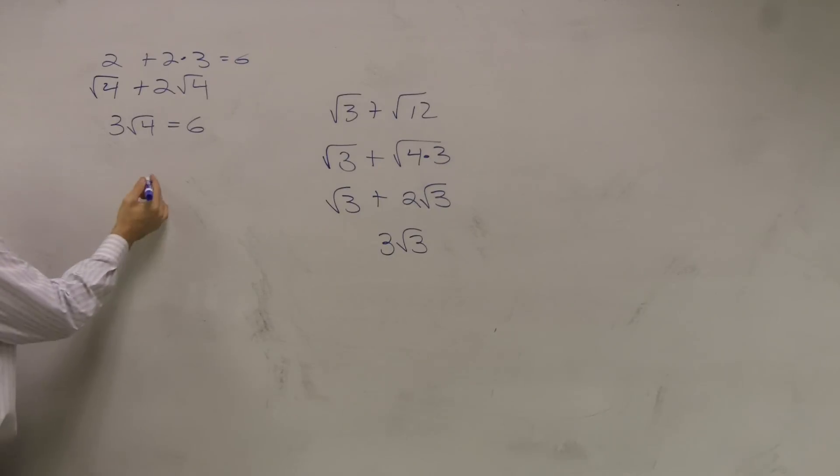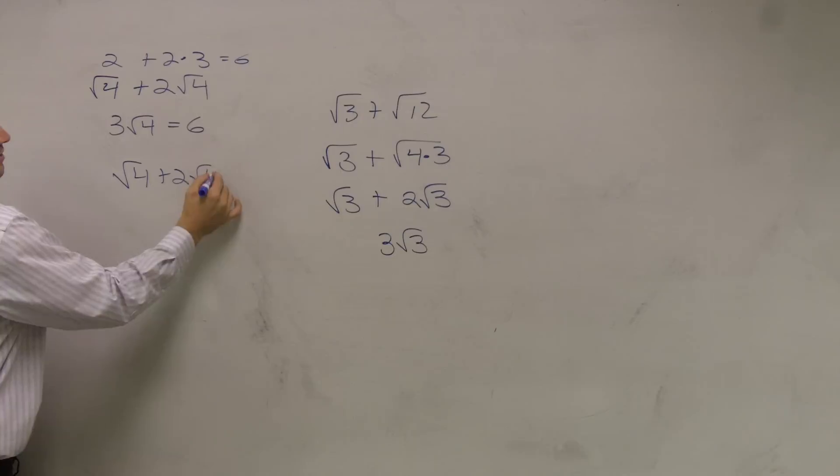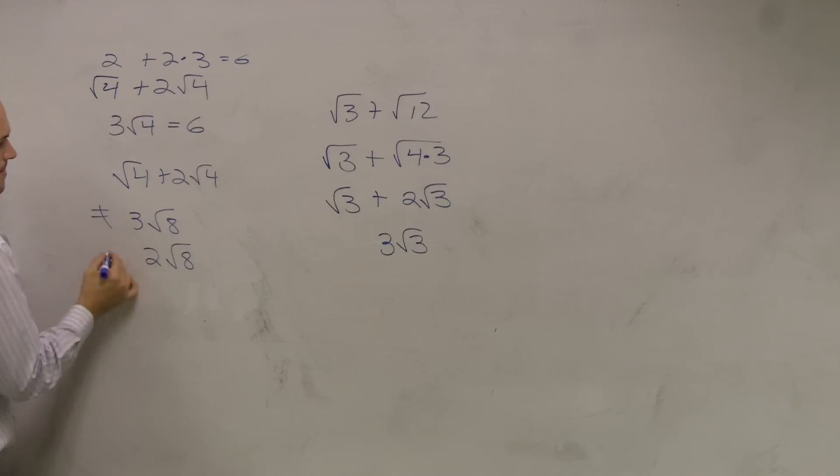Now let's take a look at what you shouldn't do. Let's say you had square root of 4 plus 2 square root of 4. That is not going to equal 3 square root of 8 or 2 square root of 8. Because if you plug these in your calculator, 2 times square root of 8 or 3 times square root of 8, that does not equal 6.